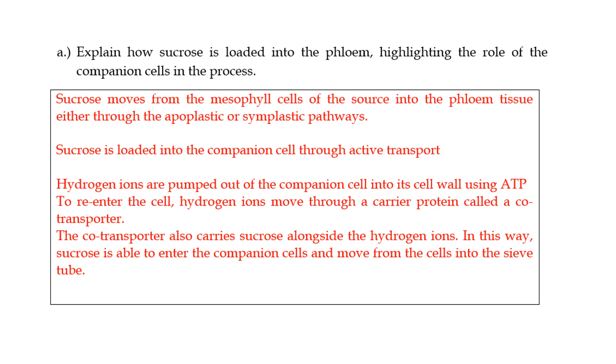Then also mention that sucrose moves from the source into the phloem tissue, either through the apoplastic or symplastic pathways, because that's going to give you an additional mark. Typically in the exam, this question is about five marks. So if you are able to give five points, you will be fine. So I've just given you two, the first two.